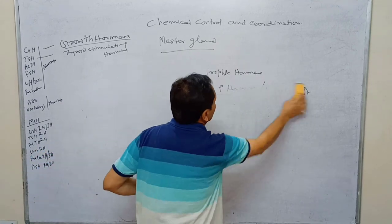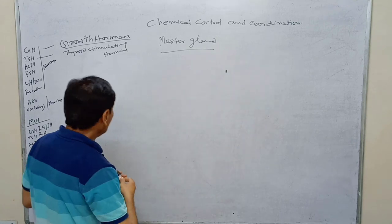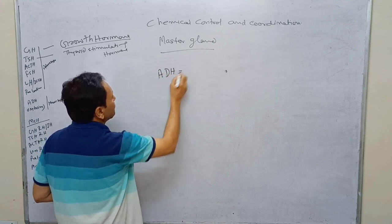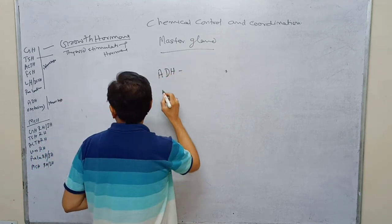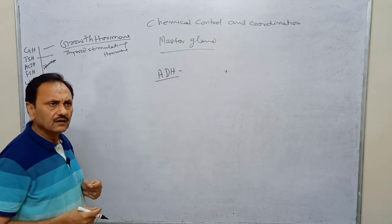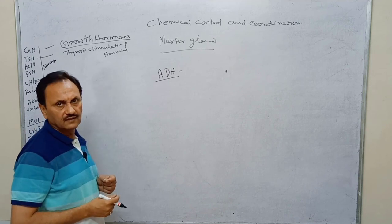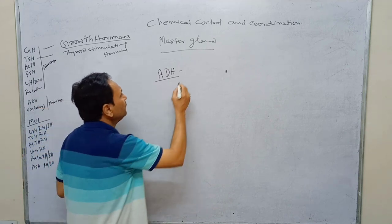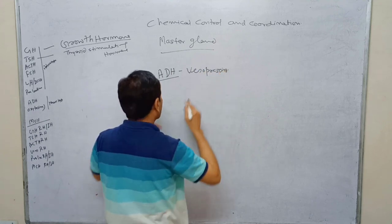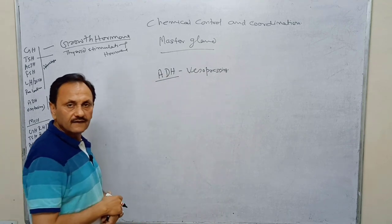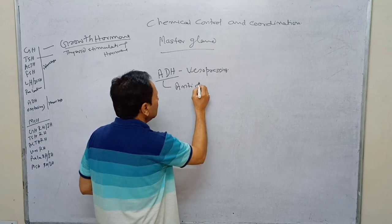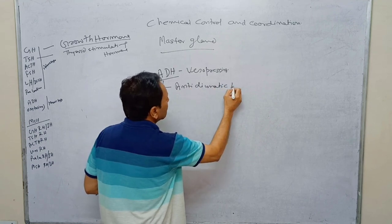The posterior lobe of the pituitary is responsible for releasing ADH, also called vasopressin. ADH stands for antidiuretic hormone. We have discussed this hormone in the context of excretion.